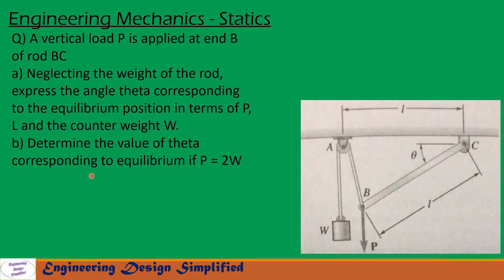Determine the value of theta corresponding to equilibrium if P equals 2W. In this problem, a bar of negligible weight BC is hinged at C. At B there is a string attached over a pulley A, and at the other end of the string a weight W is attached. At end B a load P acts vertically downwards. In the first portion we derive an expression in terms of theta, L, P, and W. In the second portion, with P equal to 2W, we find theta.